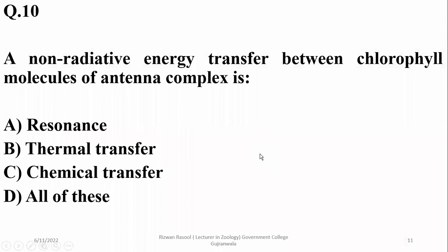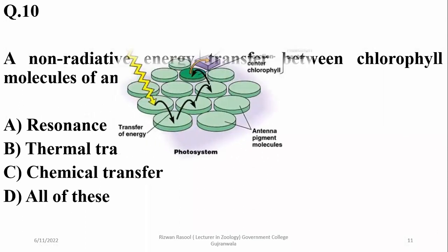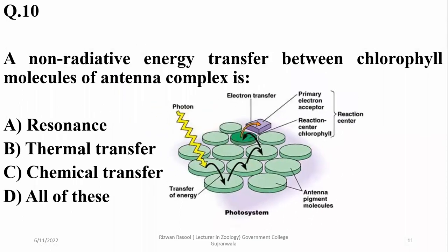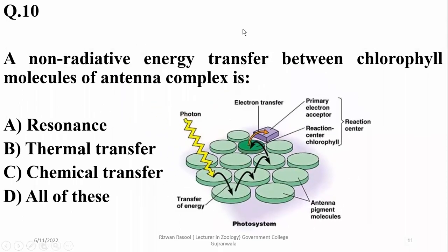Question ten: A non-radiative energy transfer between chlorophyll molecules of the antenna complex is called resonance. In the antenna complex, energy transfer occurs from one molecule of a photosynthetic pigment to another until it reaches the reaction center.